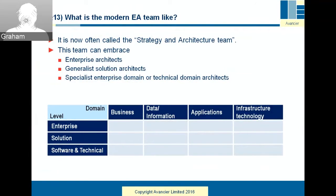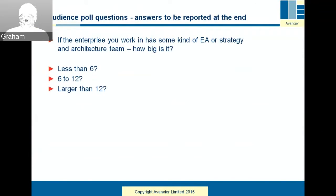What's the modern EA team like? In the UK, we have a standard called the Skills Framework for the Information Age, which has a section on roles and responsibilities called strategy and architecture, under which enterprise and solution architects are classified. What might be called an EA team in the US is often called the strategy and architecture team here, and could include anybody working across the three levels and four domains, not just enterprise architects. I'm interested in audience organizations: if your enterprise has an EA or strategy and architecture team, how big is it — less than six people, six to twelve, or larger than twelve? It's not common to have larger than twelve except in big banks and big government departments.